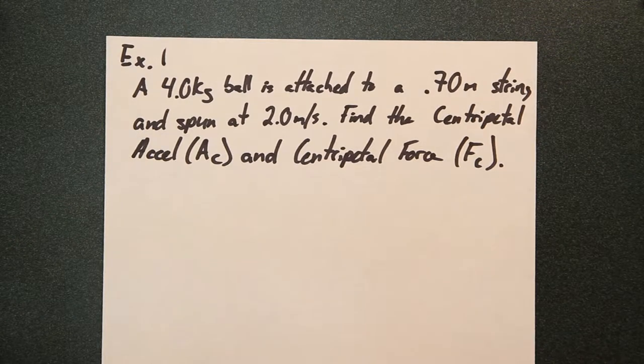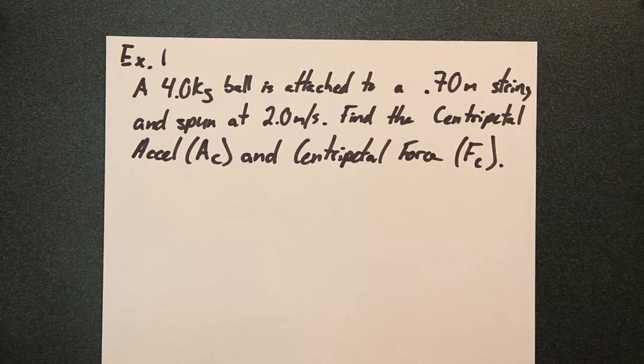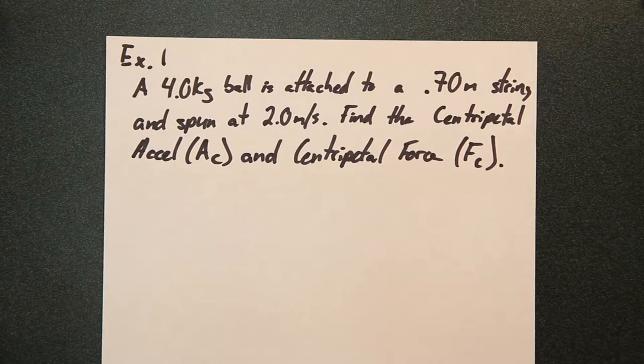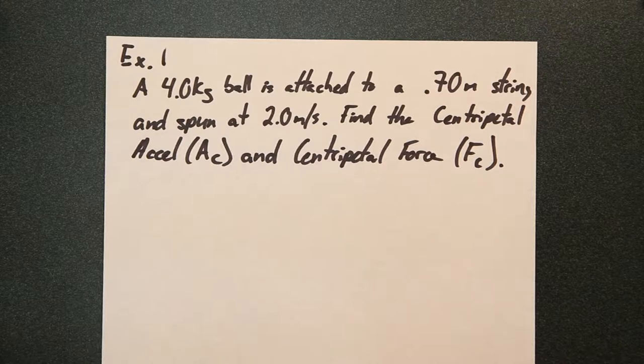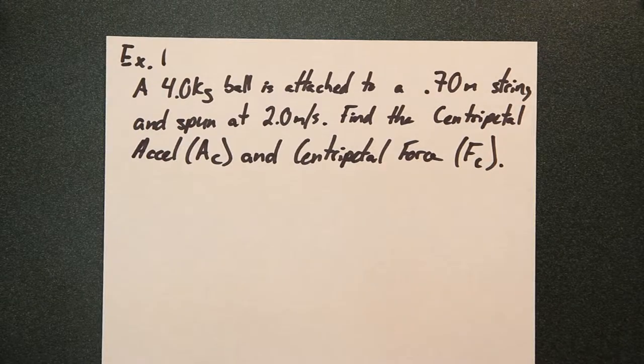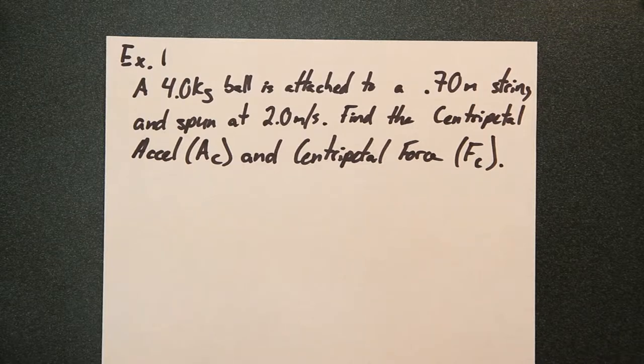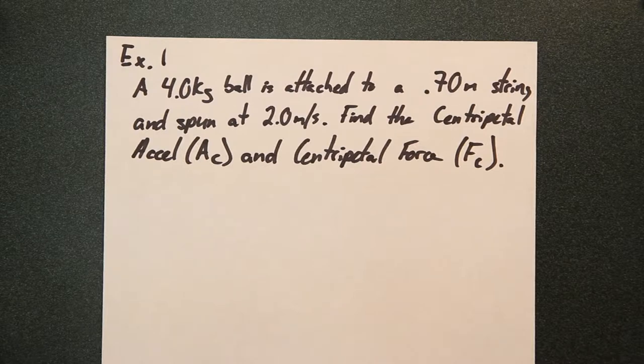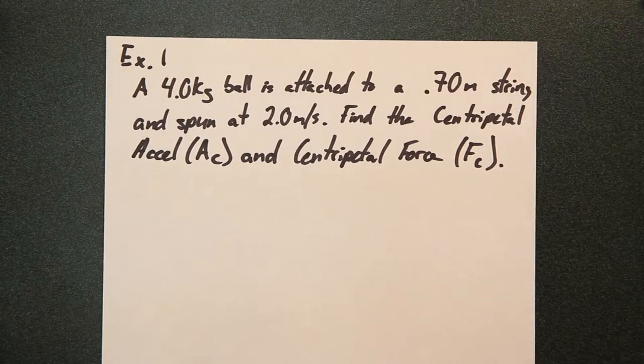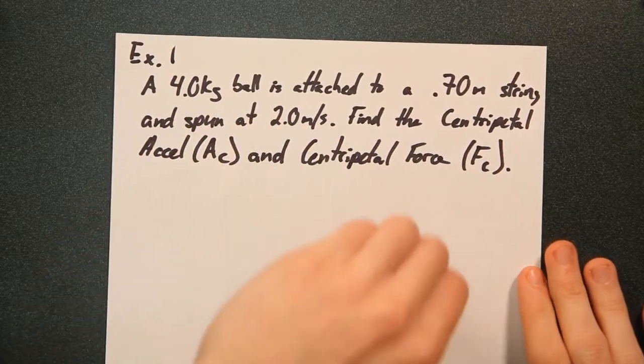All right, so for a little bit of recap, we're going to go over an example problem that has to do with centripetal force as well as centripetal acceleration. So this problem says that a four kilogram ball is attached to a 0.7 meter string and spun at two meters per second. And we're going to be finding the centripetal acceleration and the centripetal force that's being exerted here.